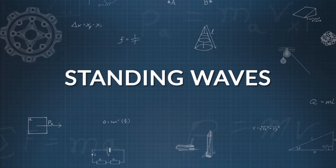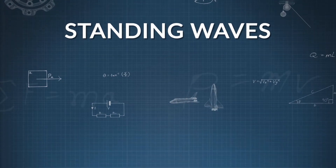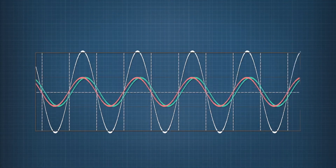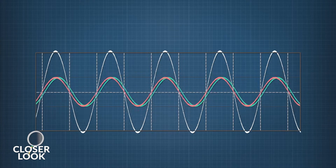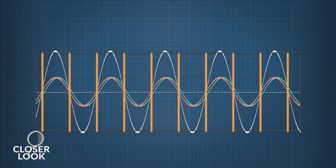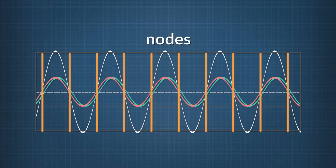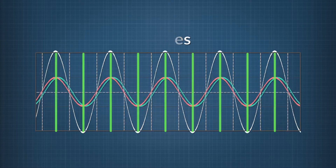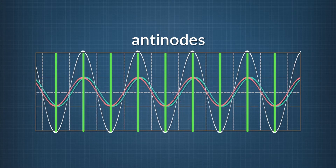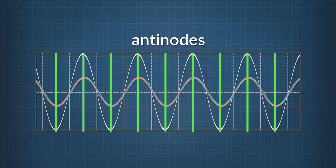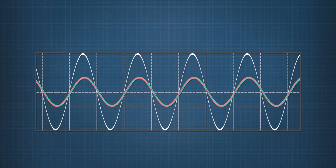In this video, we're going to take a closer look at standing waves. A standing wave is created when a wave interferes with itself after reflecting off a surface. The places where destructive interference occurs are called nodes, and the places where there is constructive interference are called antinodes. Antinodes are where the standing wave amplitude is biggest, and nodes show where the wave amplitude is zero.